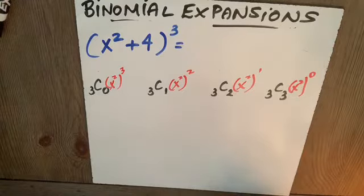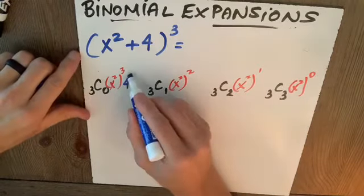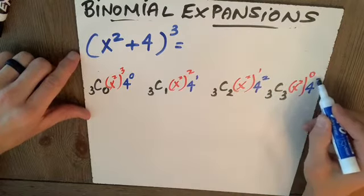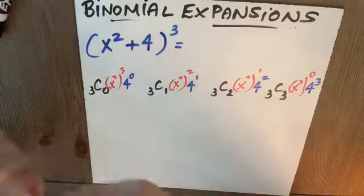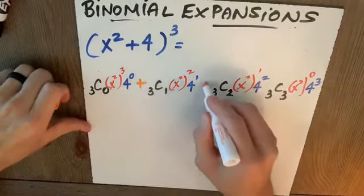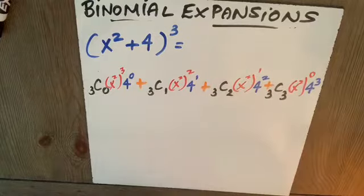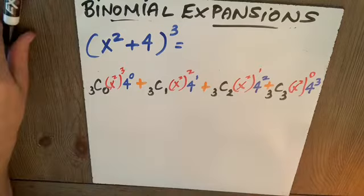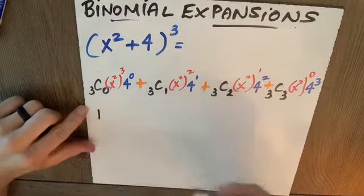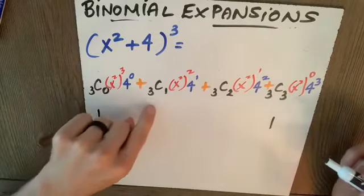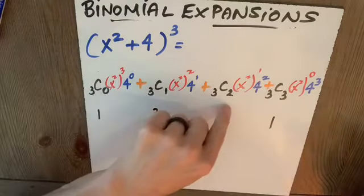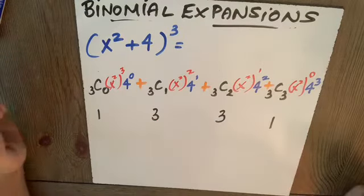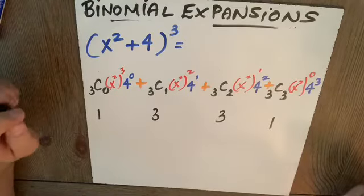My second term here will be 4 to the zero, 4 to the 1, 4 to the 2, and 4 to the 3. And don't forget, we're going to add them. So I'll be adding each of these four terms. I do know something about 3C0. Anything with a zero, 3C0 or whatever it is, is going to be 1. Same thing with 3C3. If I have 3C1, I know that's going to be 3. And 3C2 is also going to be 3. You could check those out by doing it the long way or taking the shortcut.